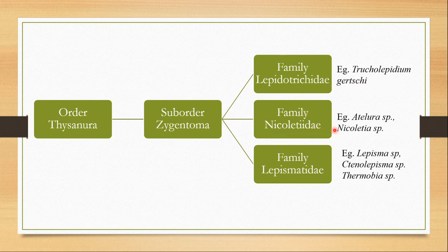Family Nicolatidae includes examples like Atelura species and Nicoletia species. Some of these family members are myrmecophilous, meaning they are found in ants' nests, and some are termitophilous, meaning they are found in termites' nests.